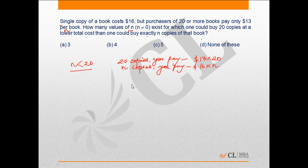we know the thing that is asked is that this price should be less than $16 times n. From here, if you solve, you will get n has to be greater than 16 point something, so n